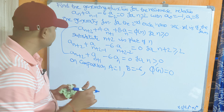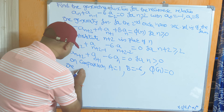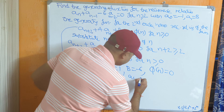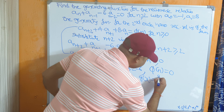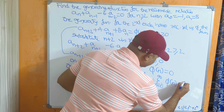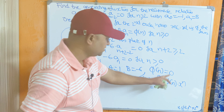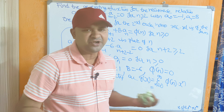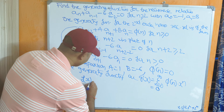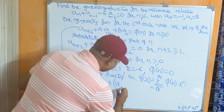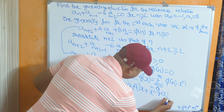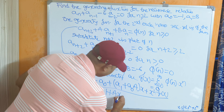Now we have to write the generating functions. We need to remember two formulas. The formula for g(x) is g(x) = Σ(n=0 to ∞) π(n)·xⁿ. The formula for f(x) is f(x) = [a₀ + (a₁ + a·a₀)·x + x²·g(x)] / [1 + a·x + b·x²].